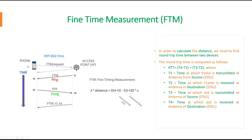Let's say there is a phone and an access point. To measure the distance, the phone first sends a request — the FTM request — and time T1 starts. When it reaches the access point, that is T2. When the acknowledgement starts from the access point back to the phone, that is T3. When it reaches the phone again, that is T4.